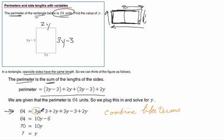We have 3y, another 2y, a 3y, and another 2y. We add those up to get 10y. Then looking at the constants, we have negative 3 and another negative 3, which gives us negative 6. All of a sudden, this is looking much easier.